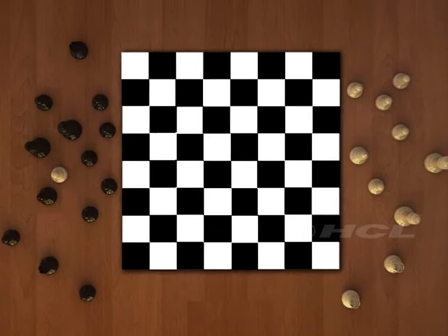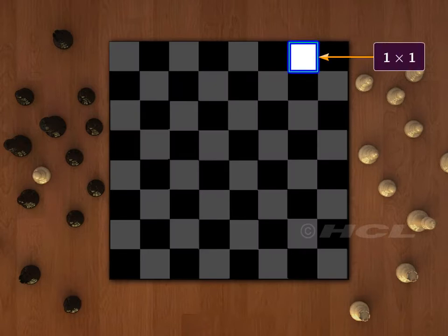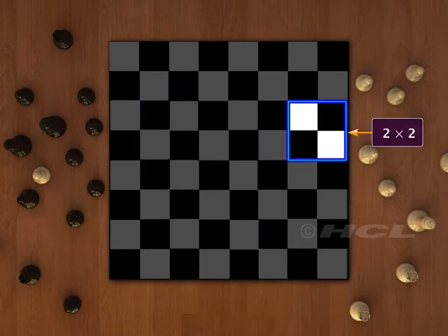Look at the chessboard. It is square in shape and made up of black and white squares. There are squares of eight different sizes within the chessboard.